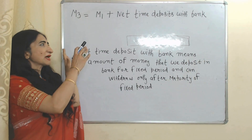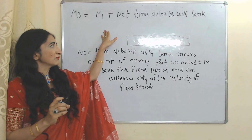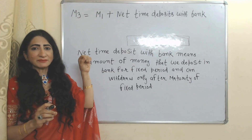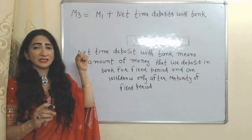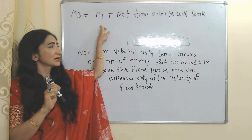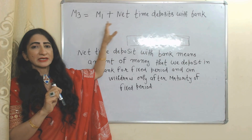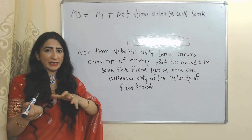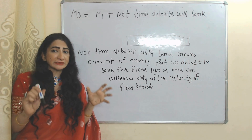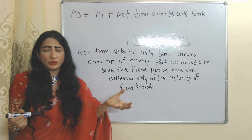The third measure is M3. M3 equals M1 plus net time deposits with banks. That means M3 includes all components of M1 plus net time deposits with banks. Net time deposits are the total amount of money deposited in a bank for a fixed time period, which can only be withdrawn after maturity.